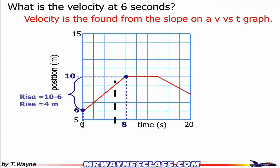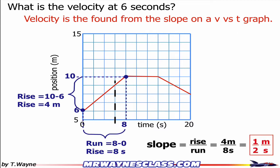So the rise is 10 minus 6, which is 4 meters. And the run is 8 minus 0, which is 8 seconds. So the slope of this line, rise over run, is 4 meters over 8 seconds, which is 1 half of a meter per second.